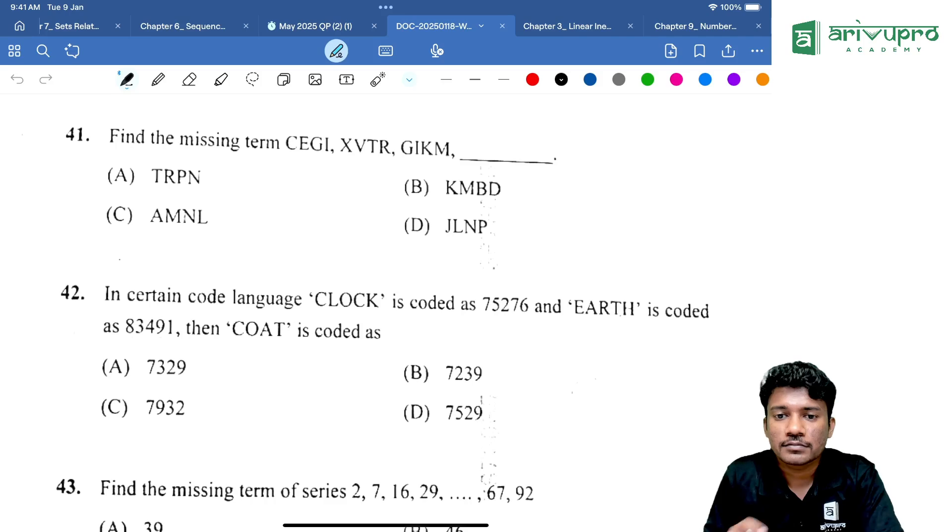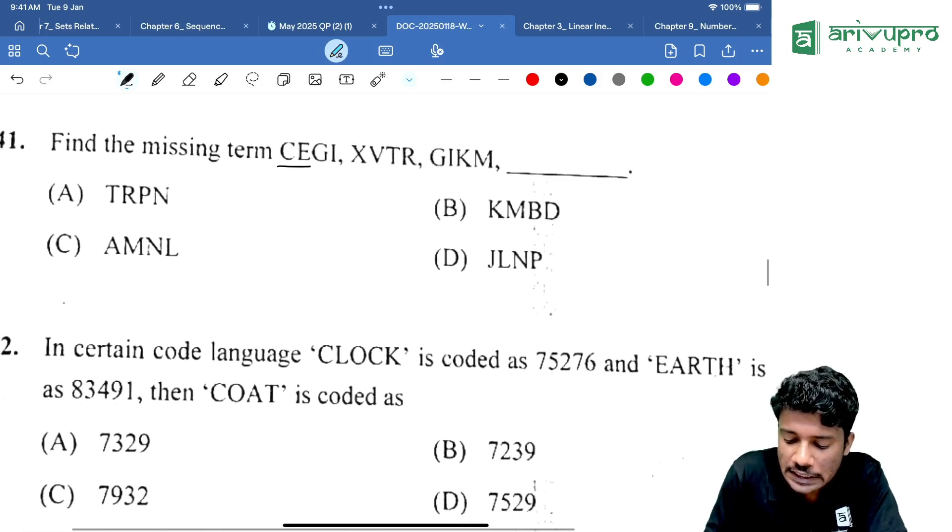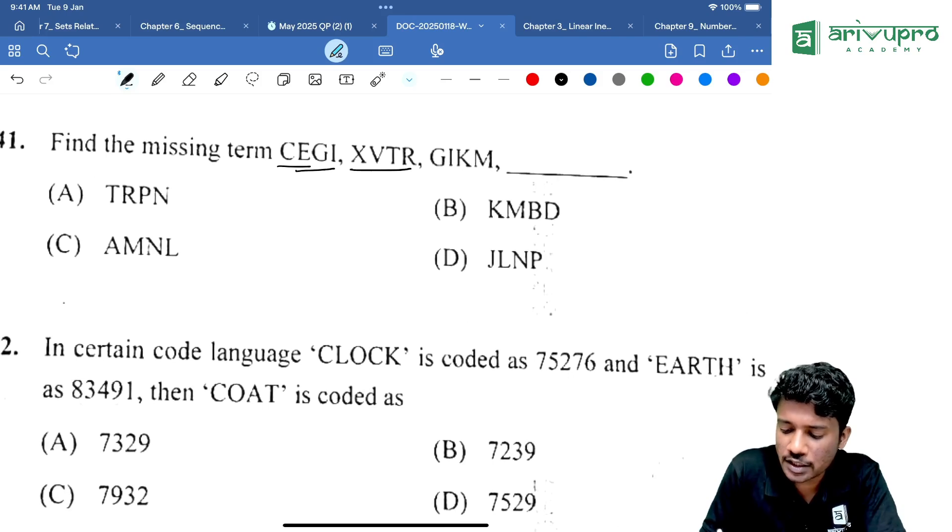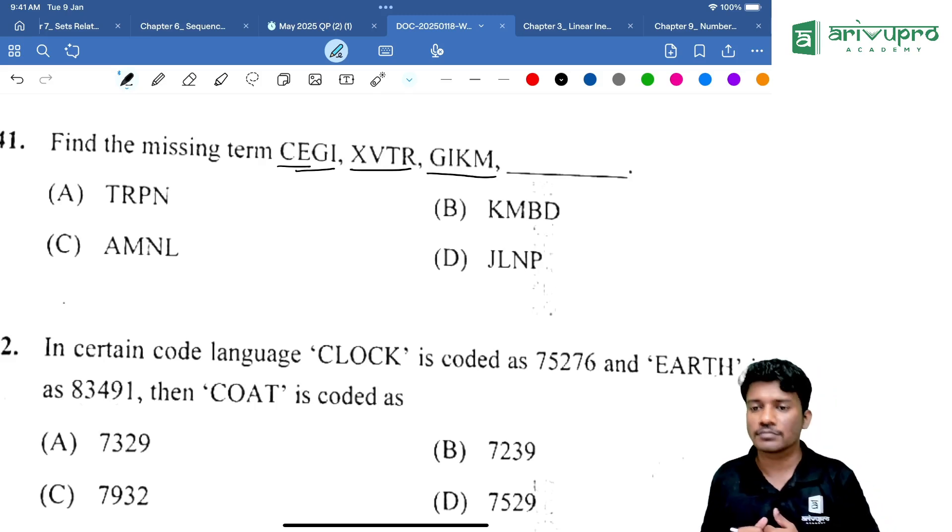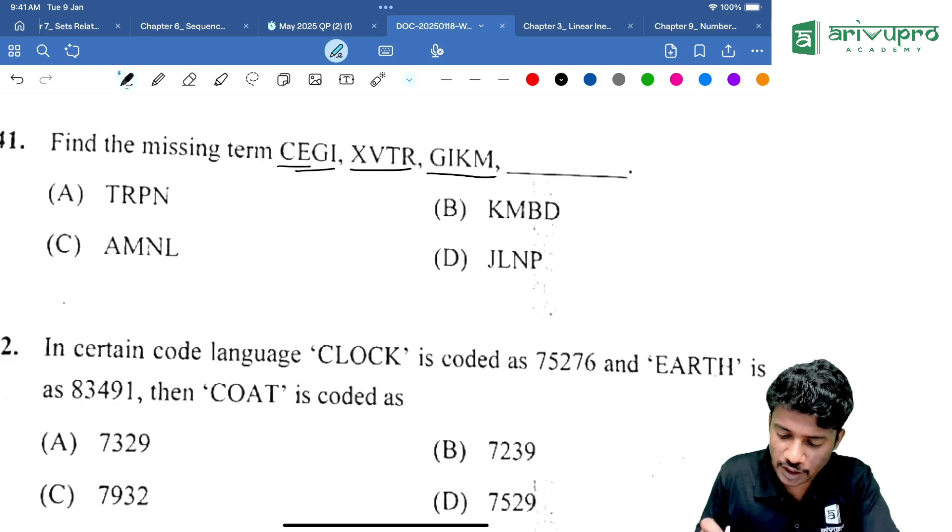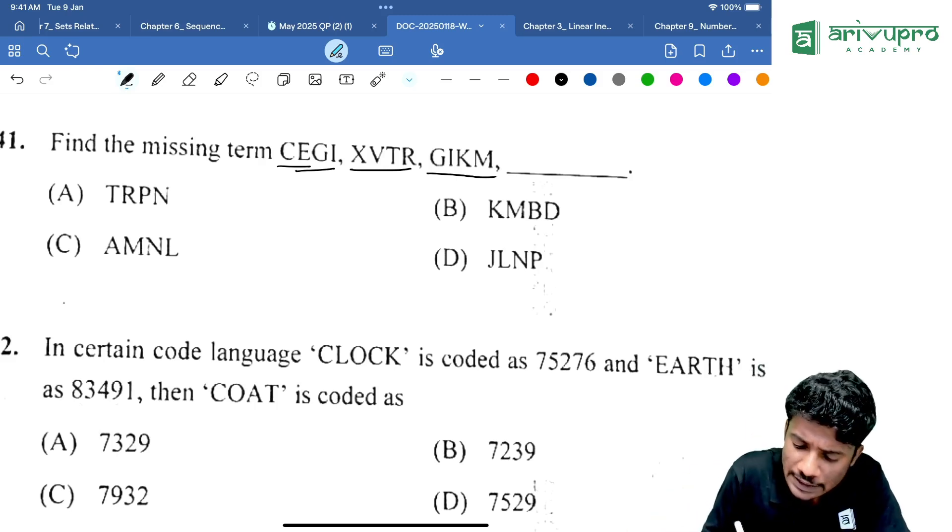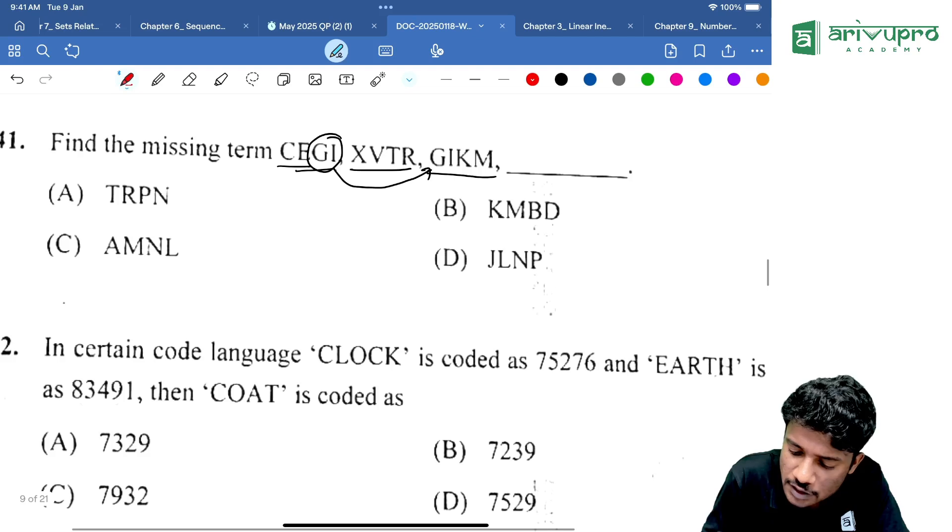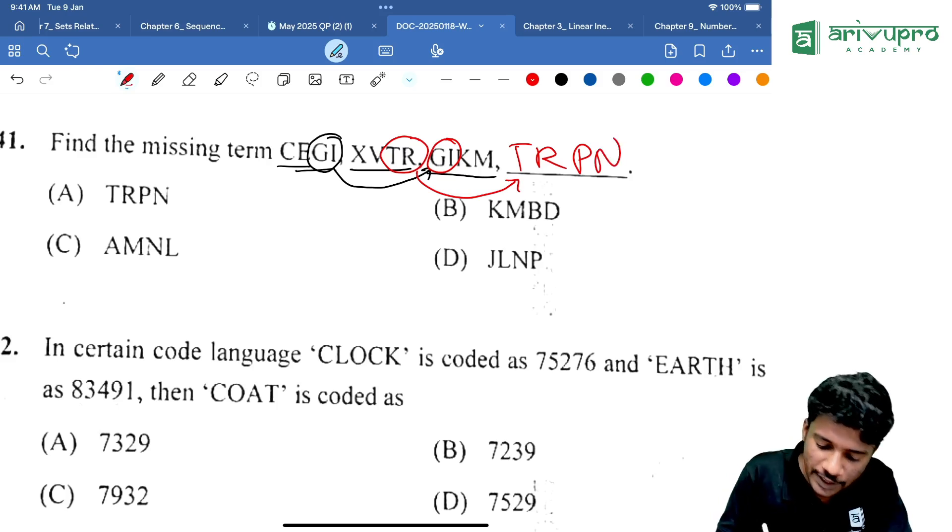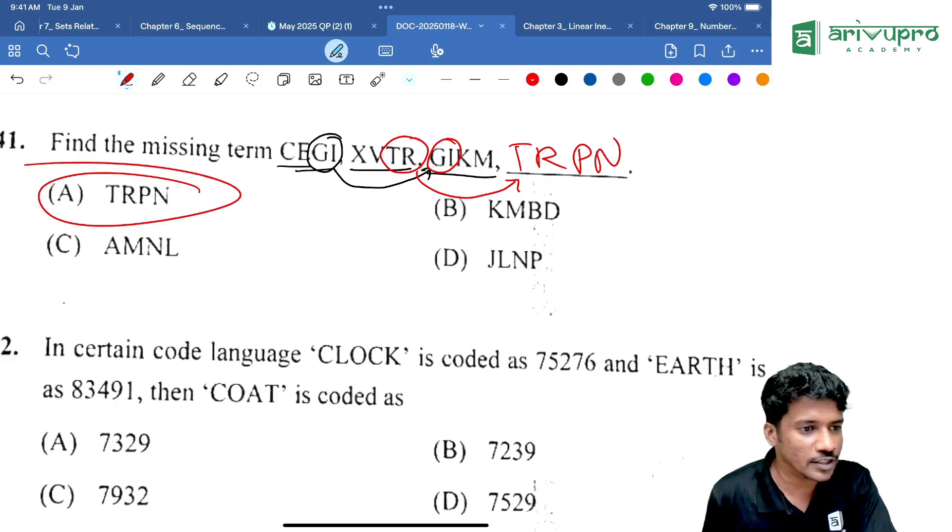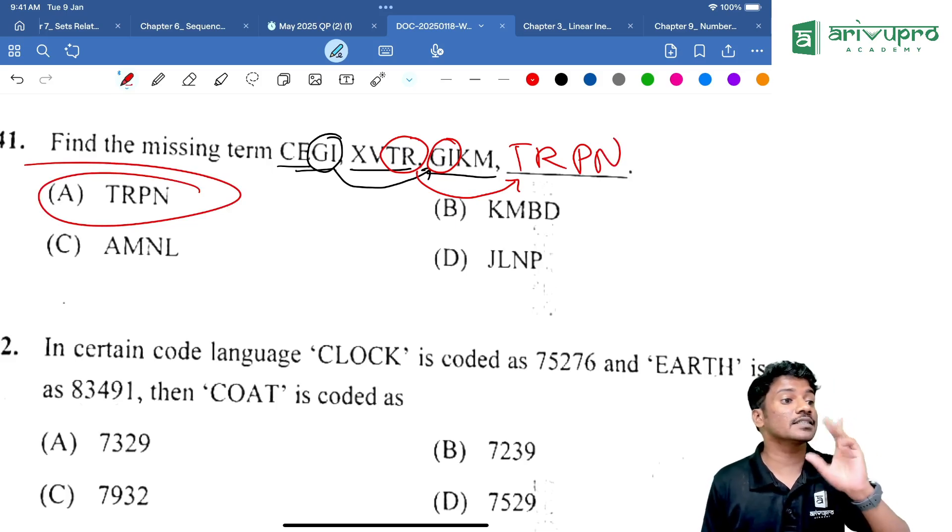Find the missing term. First question is CEGI, then XVTR, then GIKM. What is the next term? If you look here, what can you find? CEGI is becoming the first two letters of the third word. Then TR should become the first two letters of the next word. So which option can be the answer? TR, PN option is the answer.